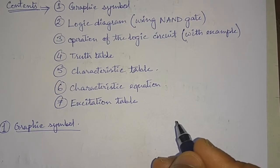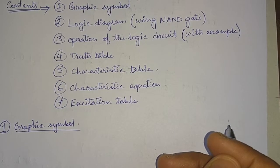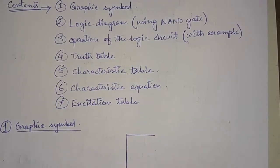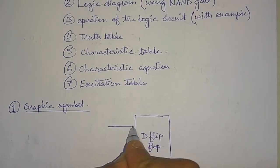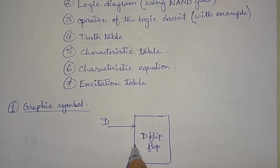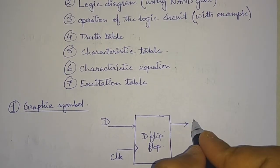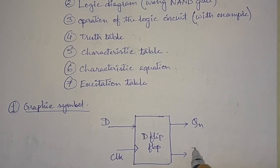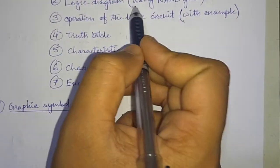A D flip-flop is a data flip-flop, or it is a modification of the SR flip-flop to avoid the forbidden or invalid state. Now we'll see the graphic symbol. The D flip-flop has an input D (the data input) and a clock input CLK. It has an output Qn and an inverted output Qn-bar. This is the graphic symbol of the D flip-flop.